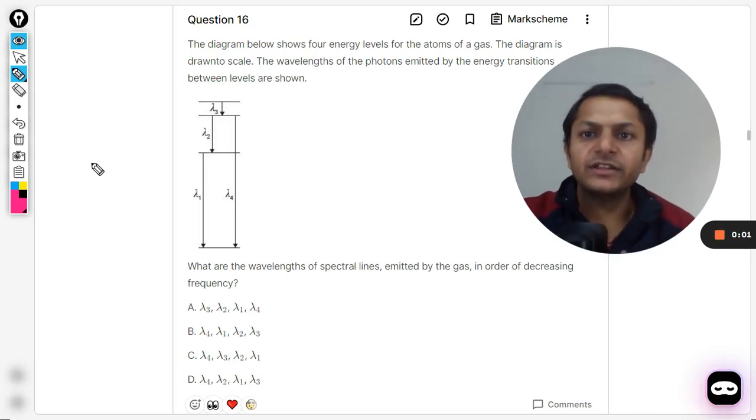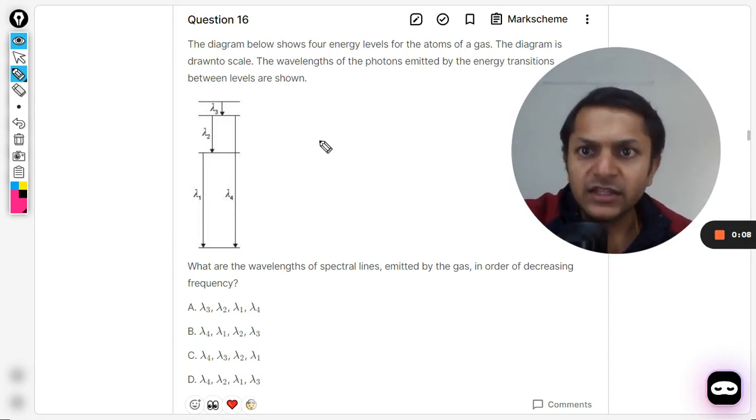Okay dear students, let us see what is there in this question. The diagram below shows four energy levels for the atoms of a gas. The diagram is drawn to scale. The wavelengths of the photons emitted by the energy transition are shown below.